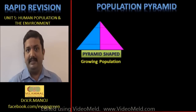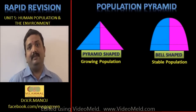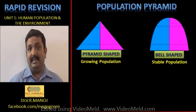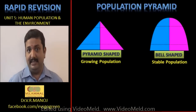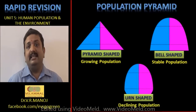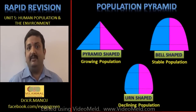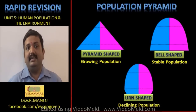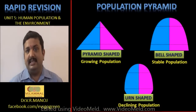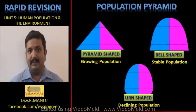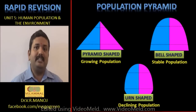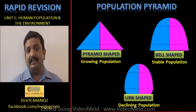Depending on the population data, the population pyramid can occupy several different shapes — namely three major shapes. The pyramid shape is indicative of a rising population. The bell shape is indicative of a declining or dangerously stable population. And the urn shape is clearly indicative of a declining population. These are the three major types of population pyramids, which graphically represent the population demographics of a particular country at any given point in time.